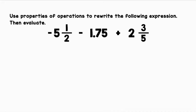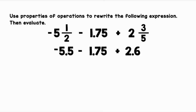Use properties of operations to rewrite the following expression, then evaluate: negative 5 and one half minus 1 and 75 hundredths plus 2 and three fifths. First, we must convert all rational numbers to the same form. I'm going to convert all the fractions to decimals. Negative 5 and one half as a decimal is negative 5.5. 2 and three fifths as a decimal is 2.6.